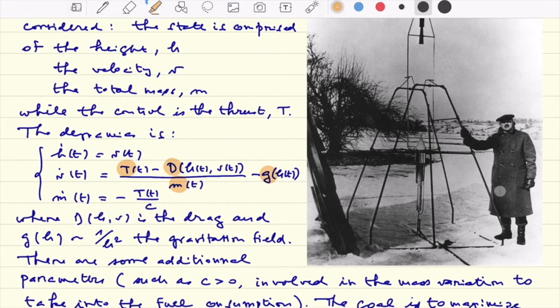And the variation of the mass accounts for the fuel consumption, so it is in fact proportional to the thrust T, again with some sign, some minus sign. Again, the mass is diminished while we thrust.